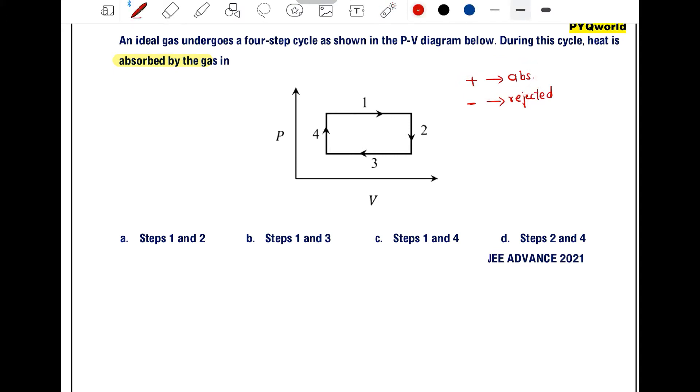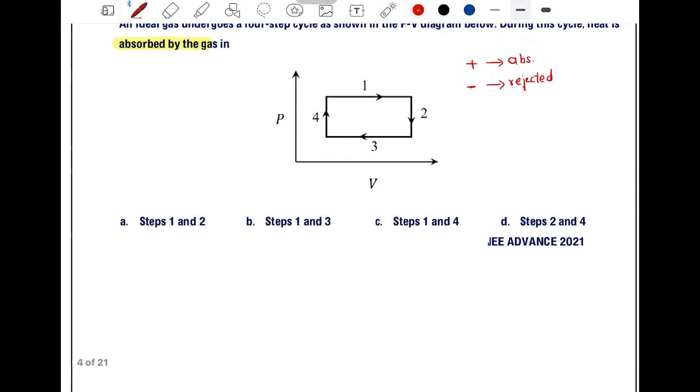In this cycle we have 4 processes: 1, 2, 3, and 4. In processes 2 and 4, volume is constant, so it is an isochoric process. In case of isochoric process, Q can be written as NCV∆T, so Q equals CV which is F by 2R, giving us Q equals F by 2 NR∆T.